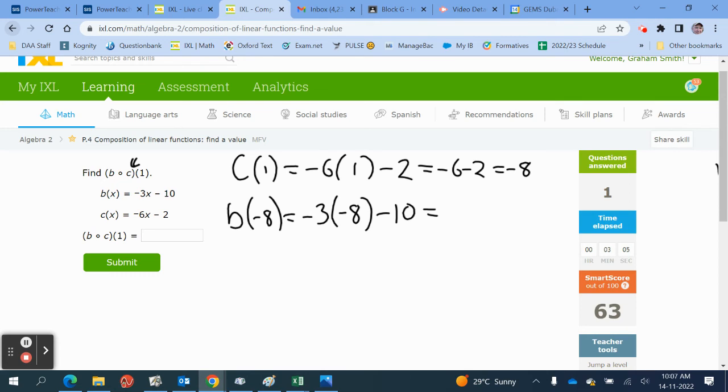Minus 3 times minus 8 is going to give us 24. We've got minus times a minus equals plus. Minus 10, 14.